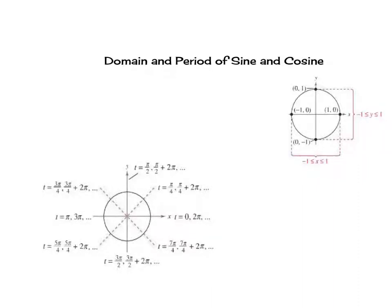The domain of sine and cosine is all real numbers, so domain is negative infinity to infinity. Now the range is a little different. The range, in this case, is here, between negative 1 and 1.